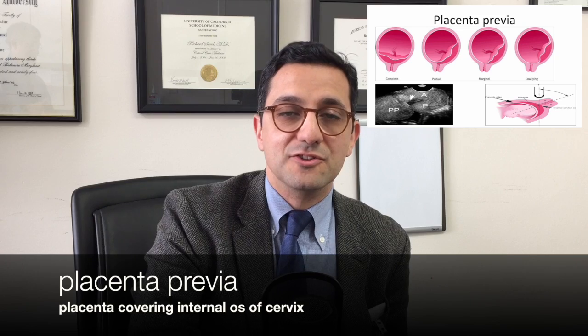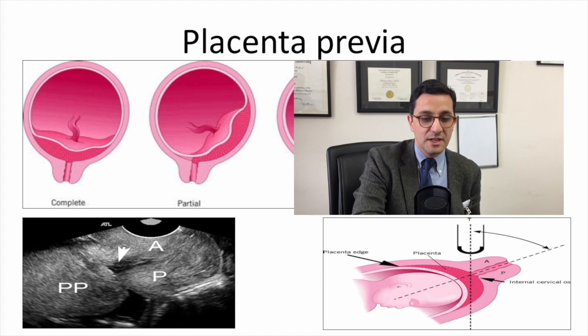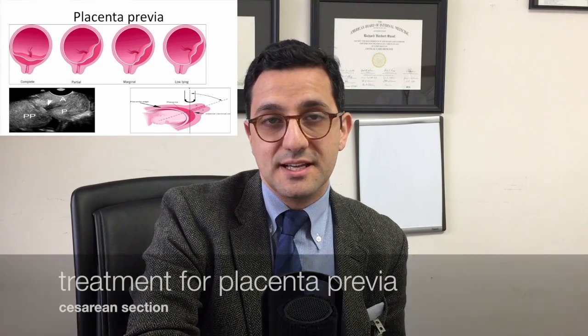The second common cause of antepartum hemorrhage is placenta previa, defined by the placenta covering the internal os of the cervix. There are different grades of coverage, from complete placenta previa to a lower-lying placenta very close to the os but not covering it. The ideal way to diagnose it is transvaginal ultrasound. Treatment is a C-section — ideally scheduled, but sometimes performed as an emergency if the patient presents with classic painless bleeding.